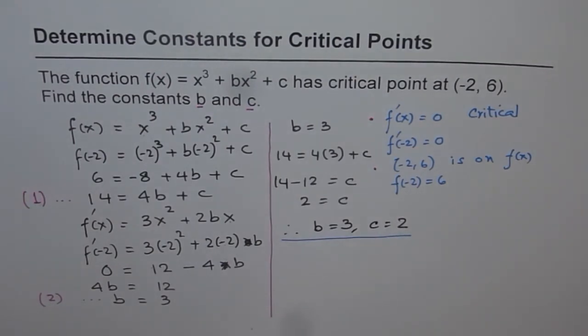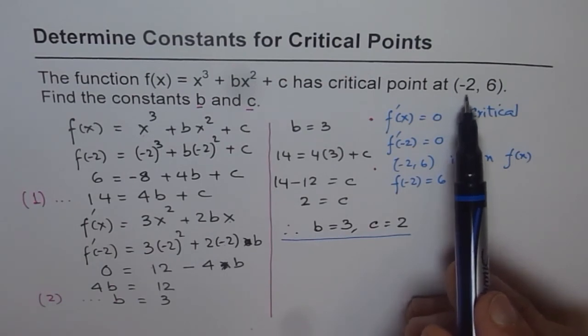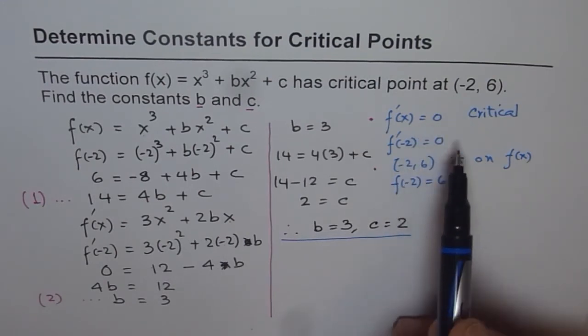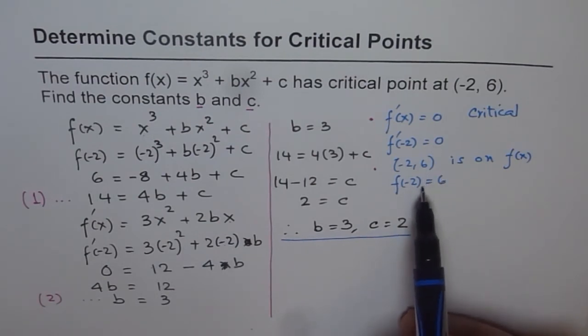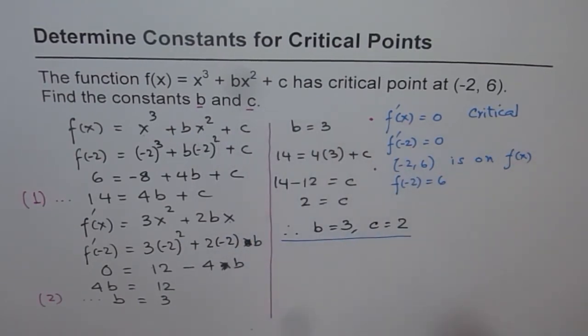So I hope you understand how we did this. So most important here is when we are given a critical point, it serves us in two different ways. One, critical point is a point where the derivative, first derivative is 0. That's 1. Second, the point has to be on the function. So that point lies on the function. That gave us two equations and so we could easily find the values of both the constants. I hope you appreciate this method. So we'll do some of or like some of the questions which are similar to this. And I hope you should be able to do them without any difficulty. Thank you.